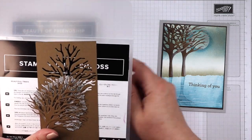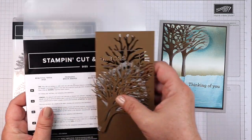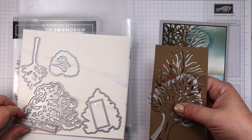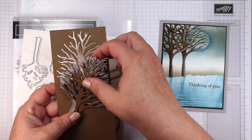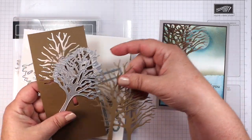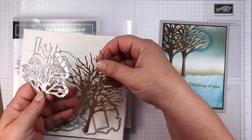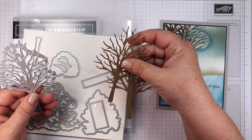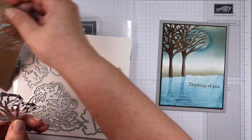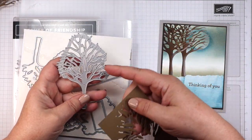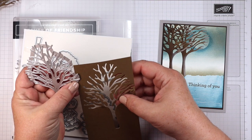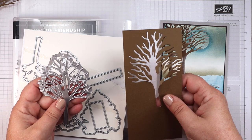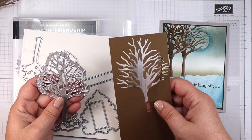The die set is Beautiful Trees and it has quite a few dies in it. We're going to use the large tree die for this card today and I cut two out of soft suede. When you die cut your tree, make sure you hang on to one of your little tree pieces that it cut out of, because we're going to use that for this project too.